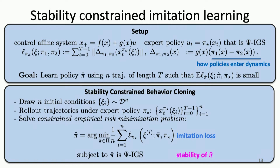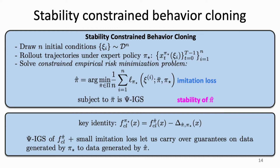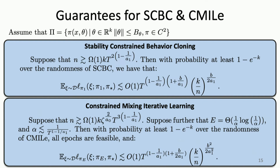The reason this is nice is you have a key identity where you can rewrite your expert policy as your learned policy plus a perturbation. So you can use the stability of your learned policy to carry over the nice guarantees of your expert, and this discrepancy term is exactly what you're minimizing. If you push this through for stability-constrained behavior cloning, you can actually get an end-to-end guarantee on the imitation loss that scales polynomially in t. We also have a DAgger or episodic-like version of this — check our poster for more details.